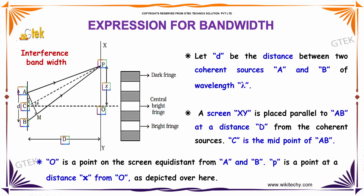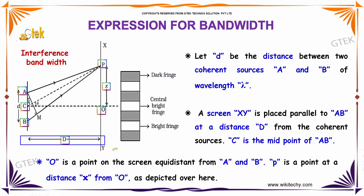Let's talk about the expression for bandwidth. For example, I have two coherent sources separated by a distance d with a wavelength lambda. A screen x, y is placed parallel to a, b at a distance of D from the coherent sources, and C is the midpoint of a, b. O is the point equidistant from a and b, and P is the point at a distance x from O as depicted here.